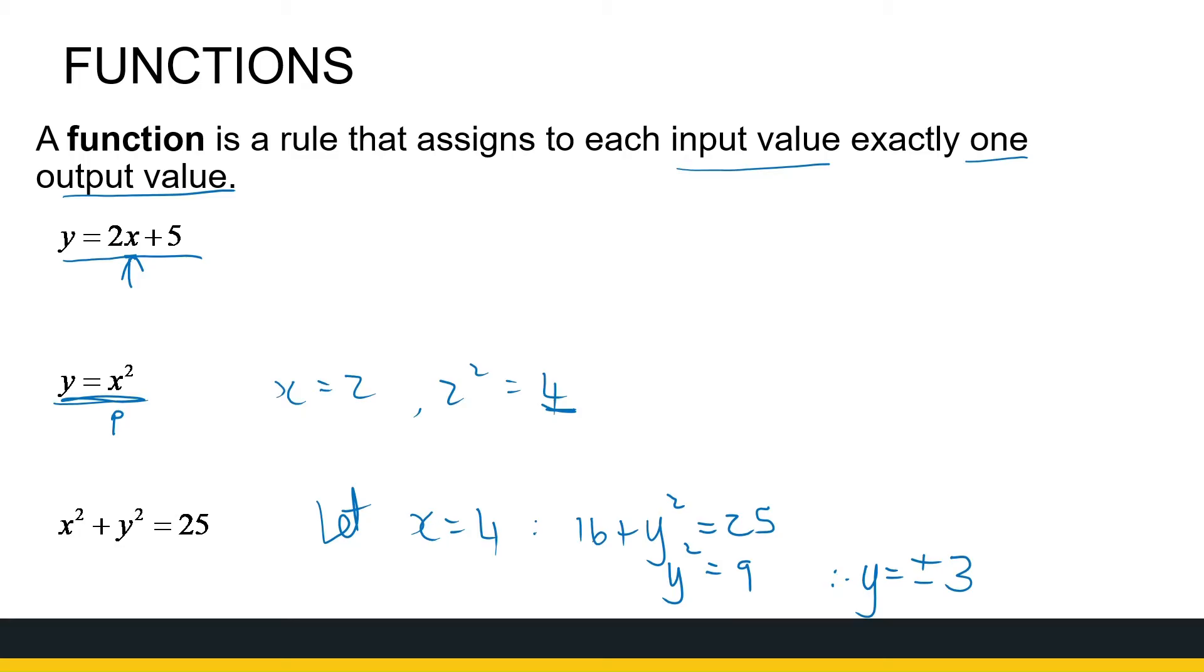So when we look at a function, it's very important that it's defined for each input value. There's a unique output value. If we look at the sketches of these, the first one is a straight line, cuts the y-axis at 5, the x-axis at minus 2.5. The second one is a parabola. The third one is a full circle. I'm not going to put all the intercepts there, but that's what it looks like.